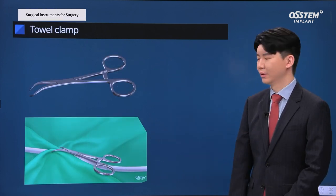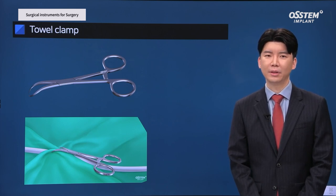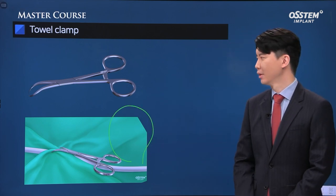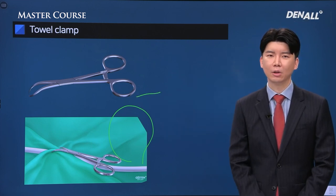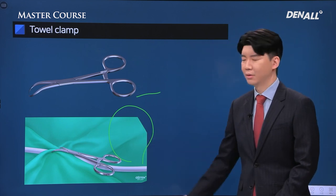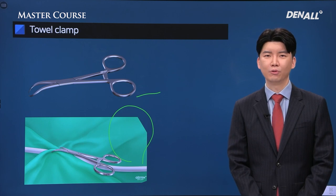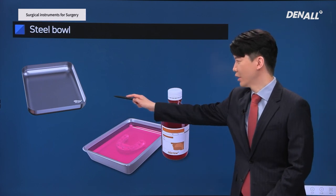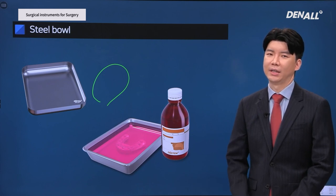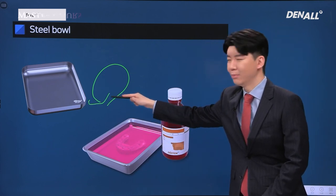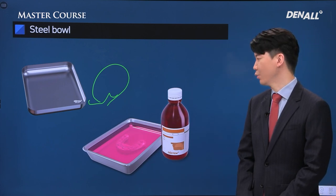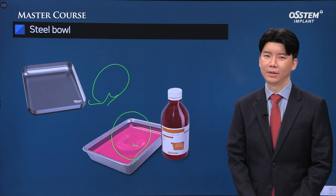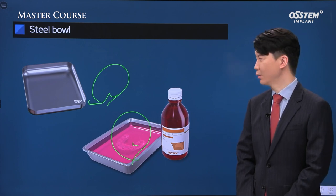A towel clamp serves as a fixation mechanism for the drape that covers the patient's stomach. Prepare a towel clamp along with the suction tip so you can fixate the drape on the patient's stomach. When performing GBR, when you irrigate bone graft material or store certain tissue briefly, you can use a steel bowl. When preparing guided surgery, you can store the surgical guide within chlorhexidine using this.